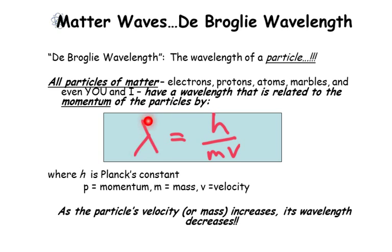the wavelength h, which is Planck's constant, divided by mv. So as the particle's velocity or mass increases, its wavelength decreases.